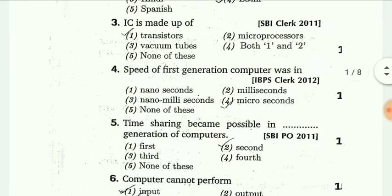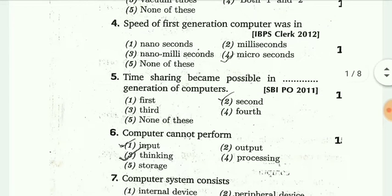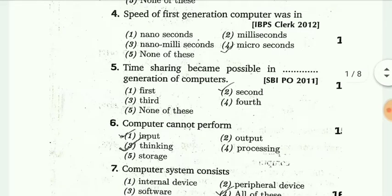The IC is made up of dash. The IC is made up of transistors. Next, the speed of first generation computer was in dash. The speed of first generation computer was in microsecond.